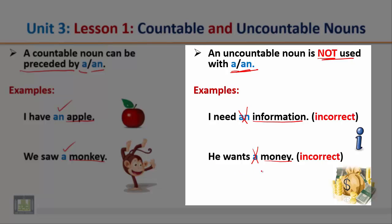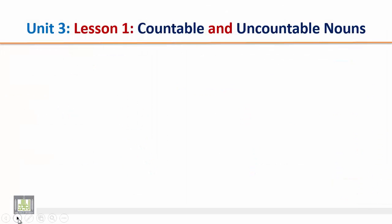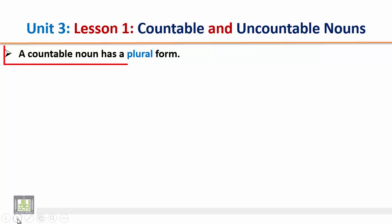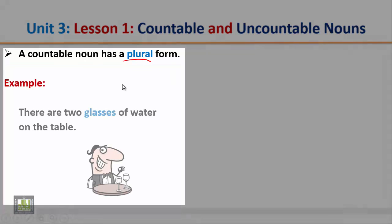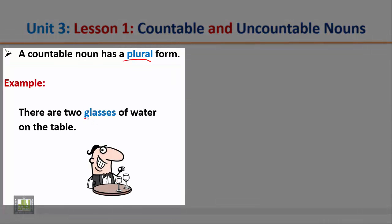Another difference: a countable noun has a plural form. Example: 'There are two glasses of water on the table.' Look at the word 'glasses' — it is a plural noun. So countable nouns have a plural form.